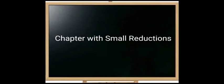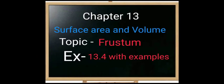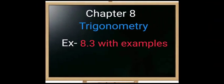Category 2 covers chapters with small reductions. Chapter 1 (Constructions) is completely deleted — no need to read or practice. Chapter 11 is also completely deleted. In Chapter 13, Surface Areas and Volumes, the topic of frustum is deleted, including Exercise 13.4 and all related example problems. In Chapter 8, Trigonometry, Exercise 8.3 is deleted along with all examples related to 8.3.